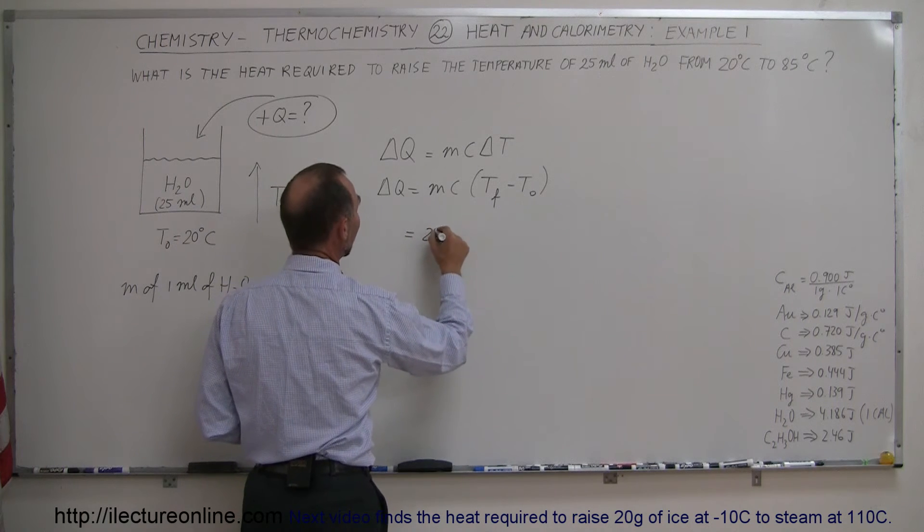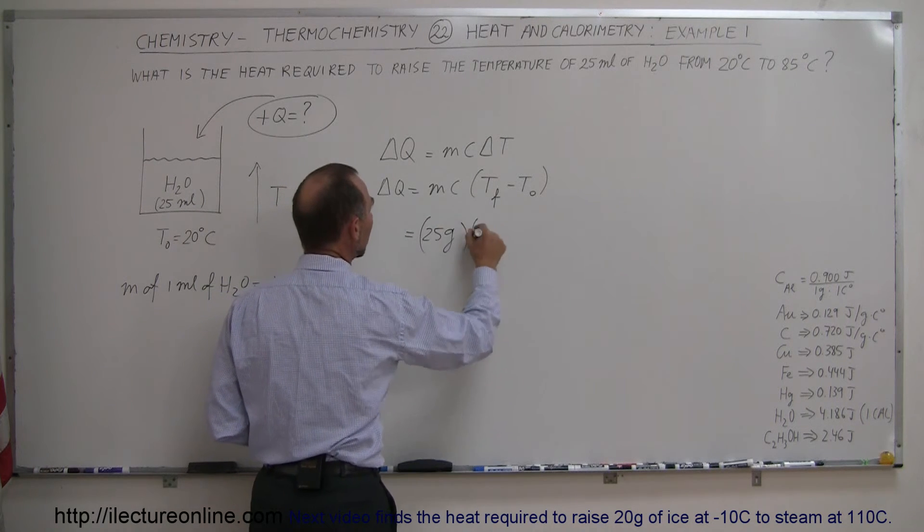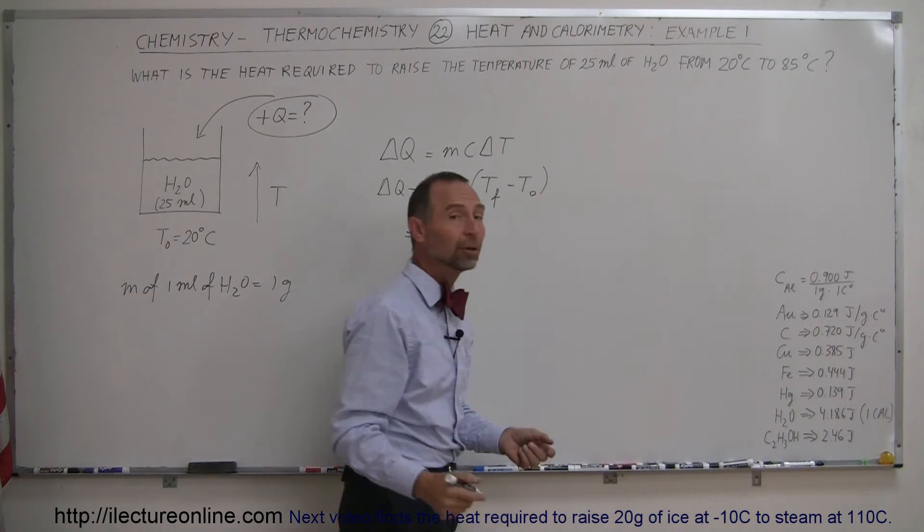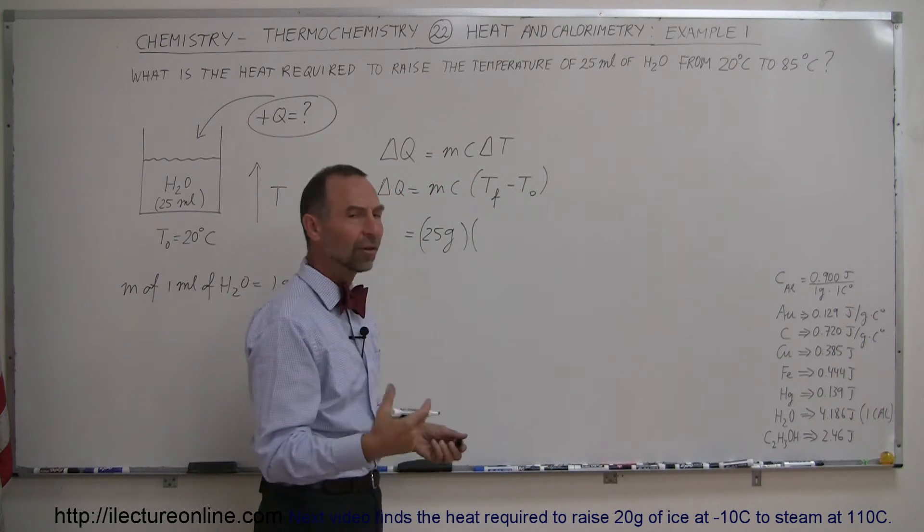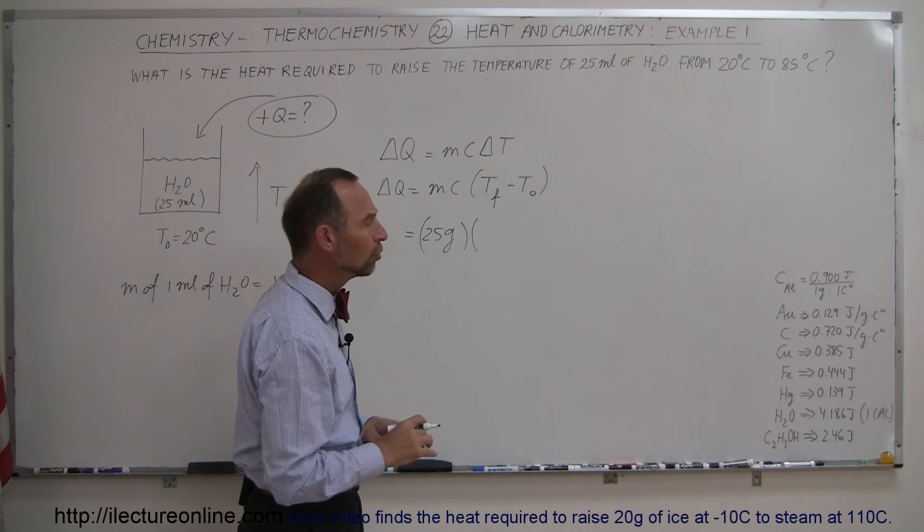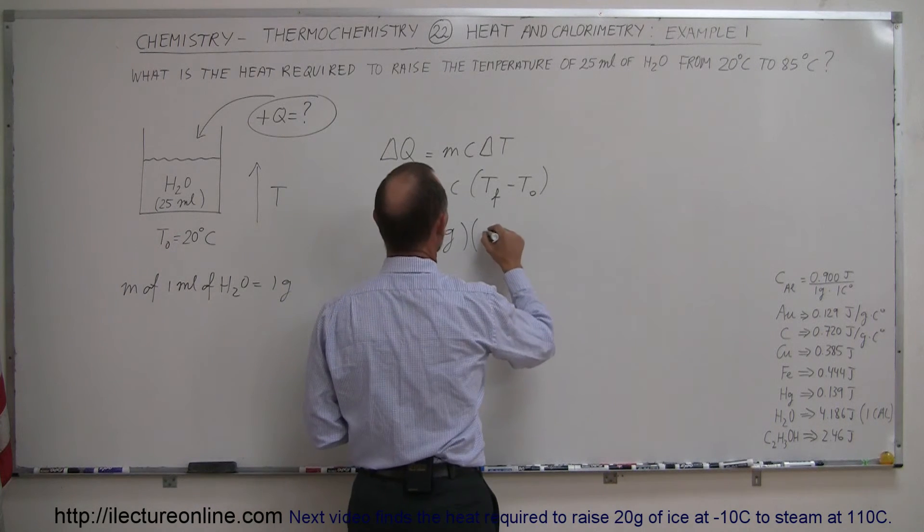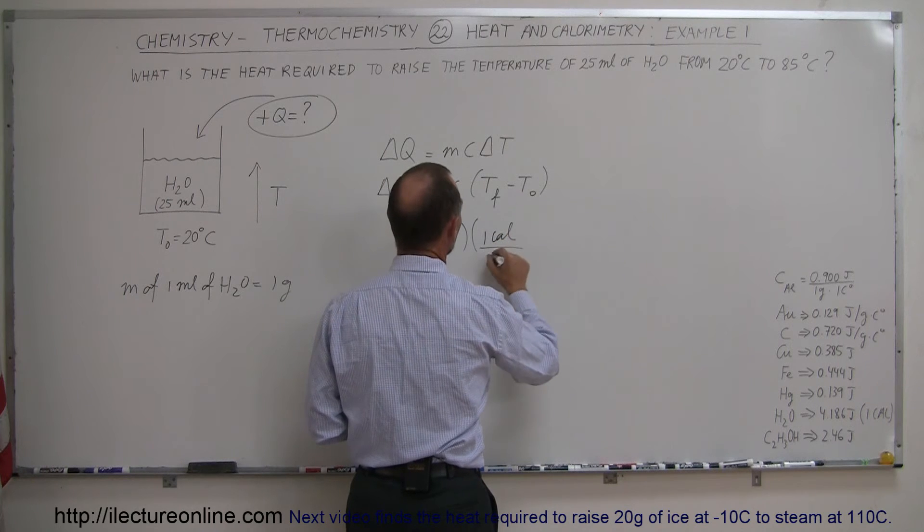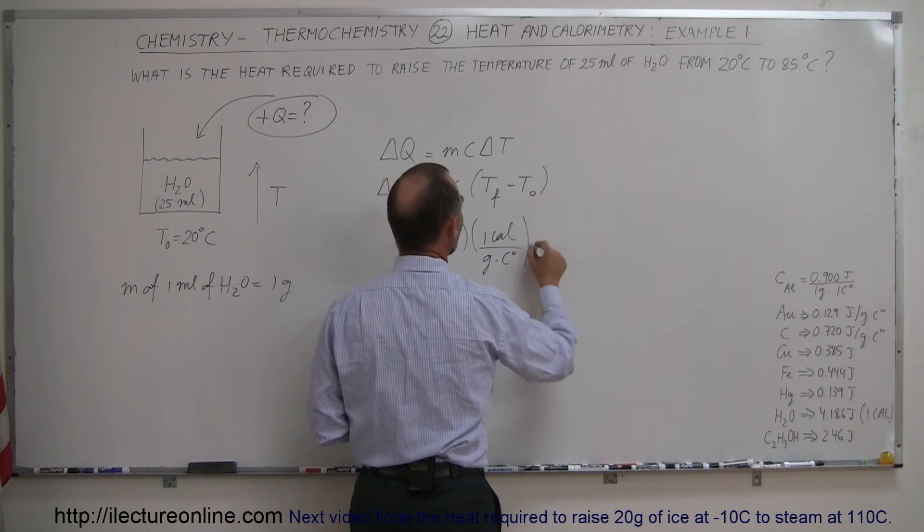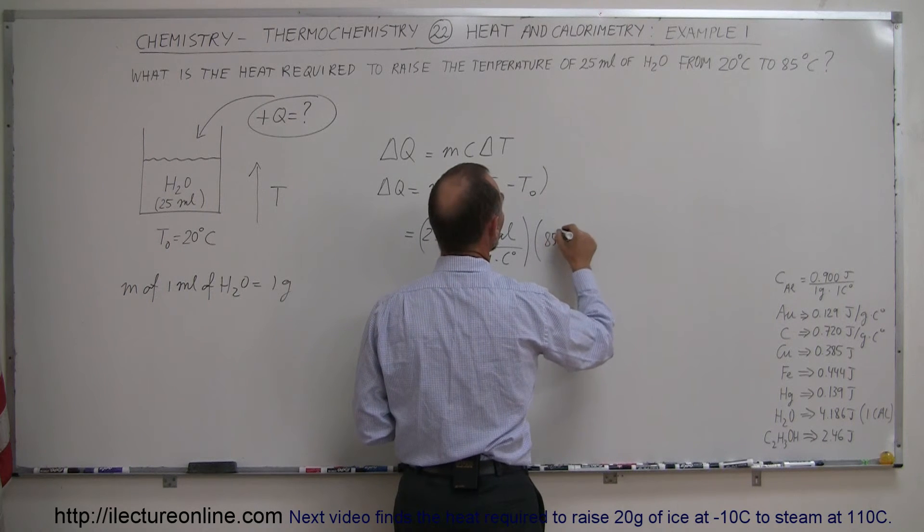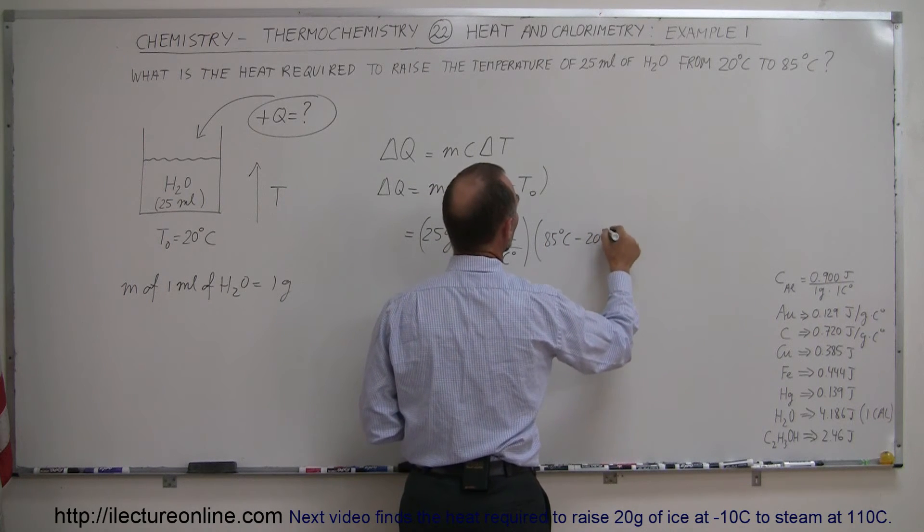So this is equal to 25 grams times the specific heat of water. Now we can do it in calories, or we can do it in joules. Calories is an older unit that we tend to use. Newer books tend to use joules much more, so I'll do it both ways. So 1 calorie per gram per centigrade degree, and then the change in the temperature, T final, which would be 85 degrees centigrade minus 20 degrees centigrade.